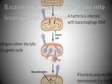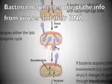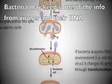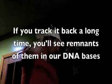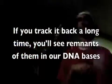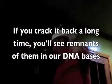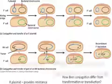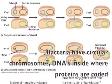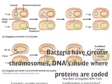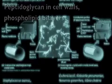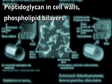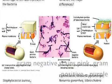The whole cell now. Bacteria may keep some of the info from viruses in their DNA — if you track it back a long time you see remnants of them in our DNA bases. Bacteria have circular chromosomes, DNA is inside where proteins are coded. Paths look like inner cell walls, phospholipid bilayers.